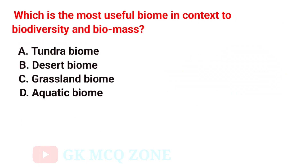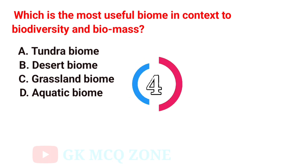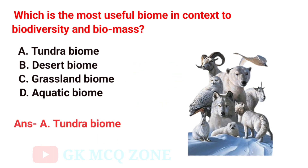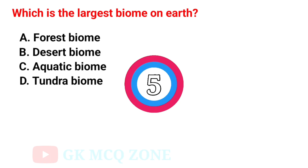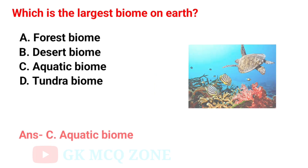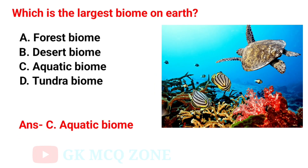Which is the most useful biome in context of biodiversity and biomass? The correct answer is Option A: Tundra Biome. Which is the largest biome on Earth? The correct answer is Option C: Aquatic Biome.